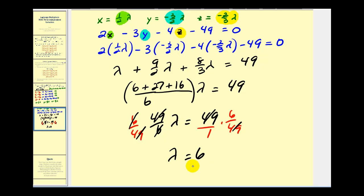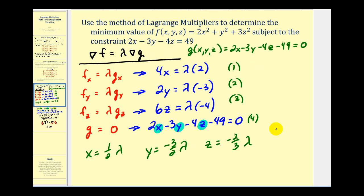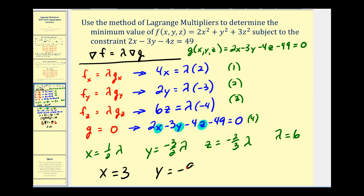Now that we have lambda, let's go back to the previous slide and determine x, y, and z. So now that we know that lambda is equal to six: one-half times six means x would be three. Negative three-halves times six would give us y equals negative nine. And for z, negative two-thirds times six, that would give us negative four. So since we only have one point to consider, that means it would be our minimum value, so go ahead and determine what that function value would be.